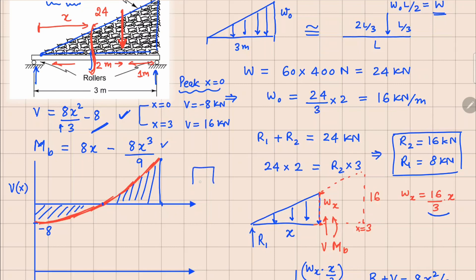For completeness, we note the sign convention: positive on one side and negative on the other. The point where shear force equals zero can be found by setting V equals 0, giving X equals square root of 3 meters. This is important because the derivative of bending moment is the shear force, so the bending moment's peak should occur at this point.